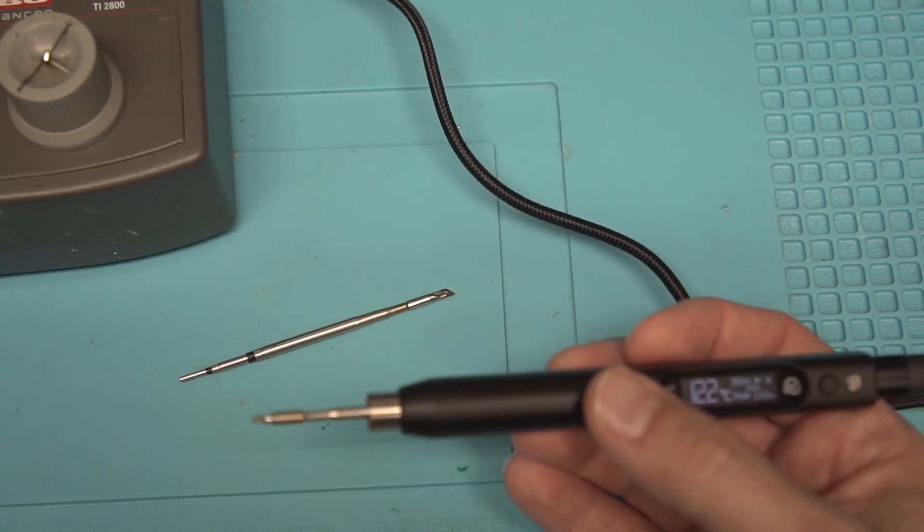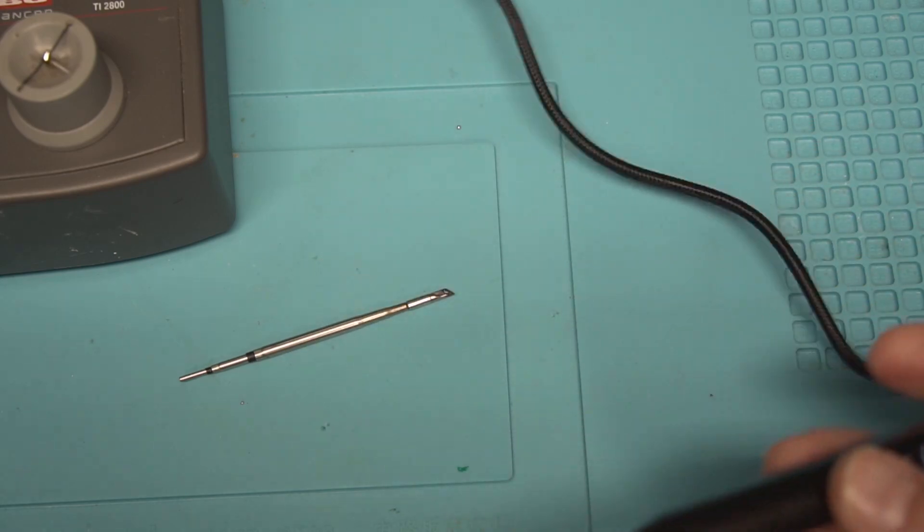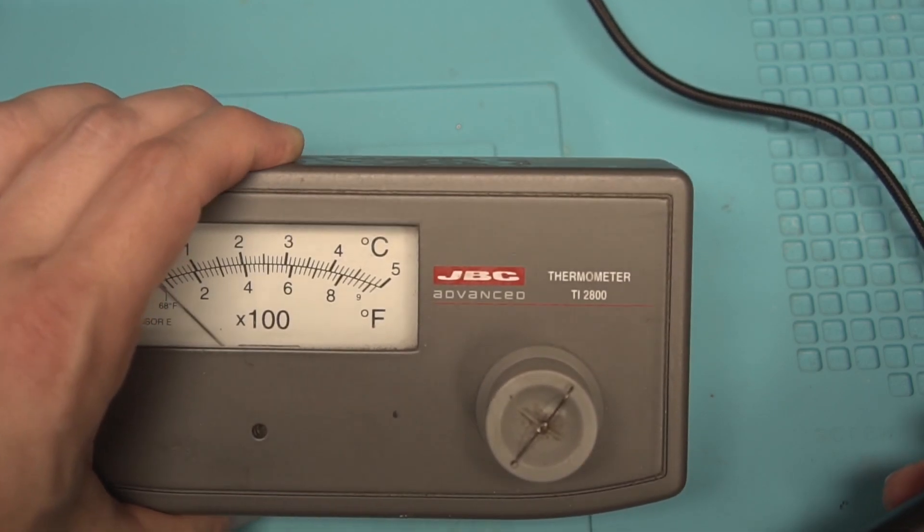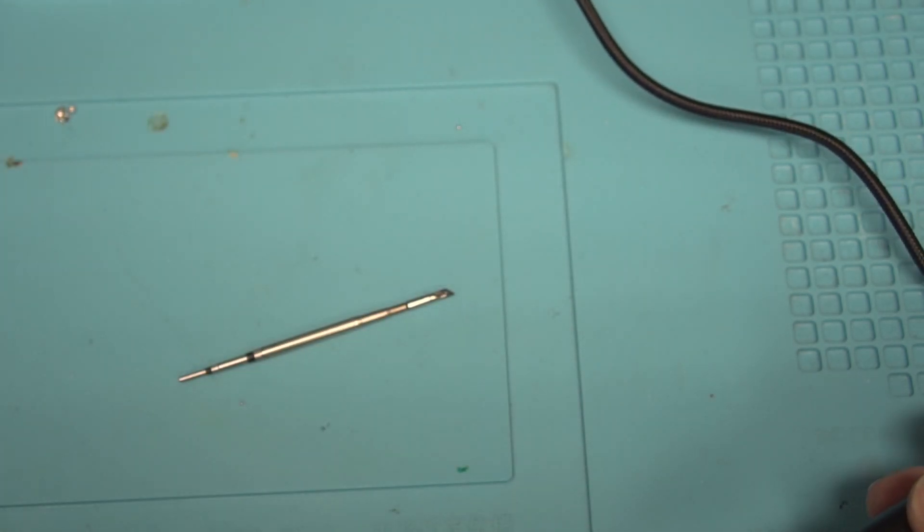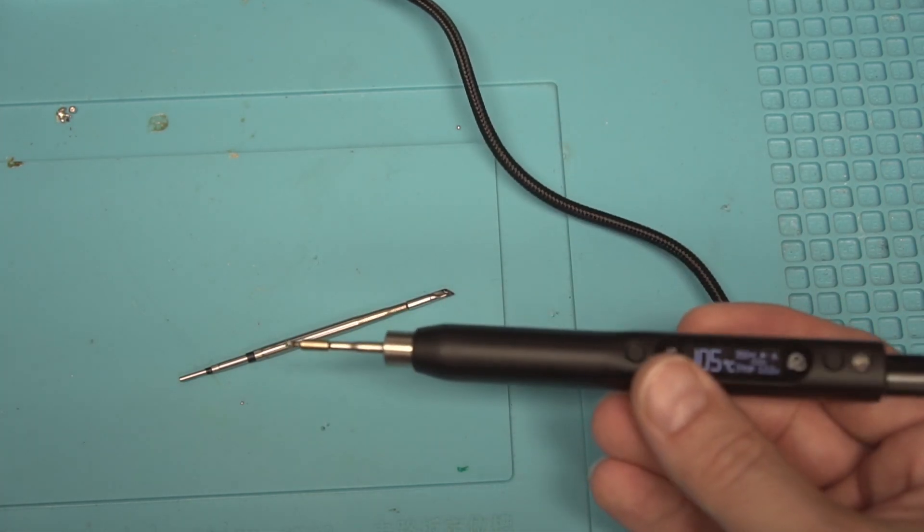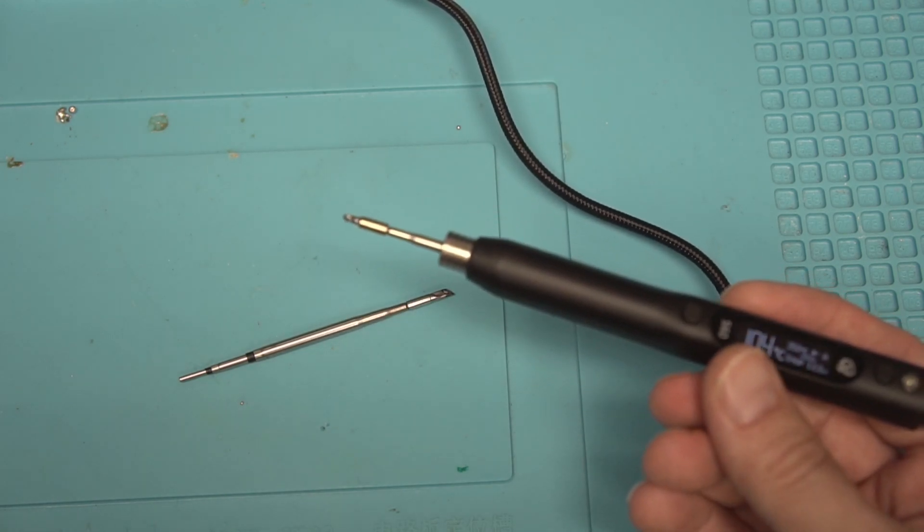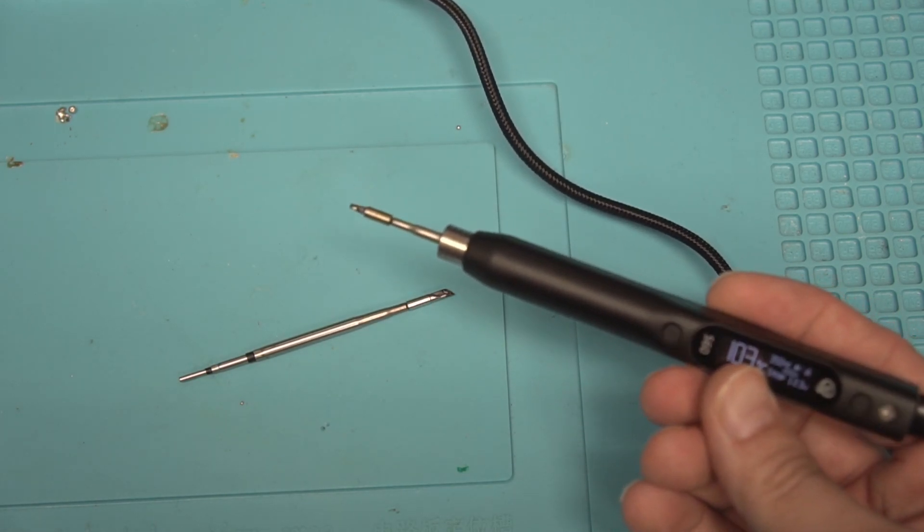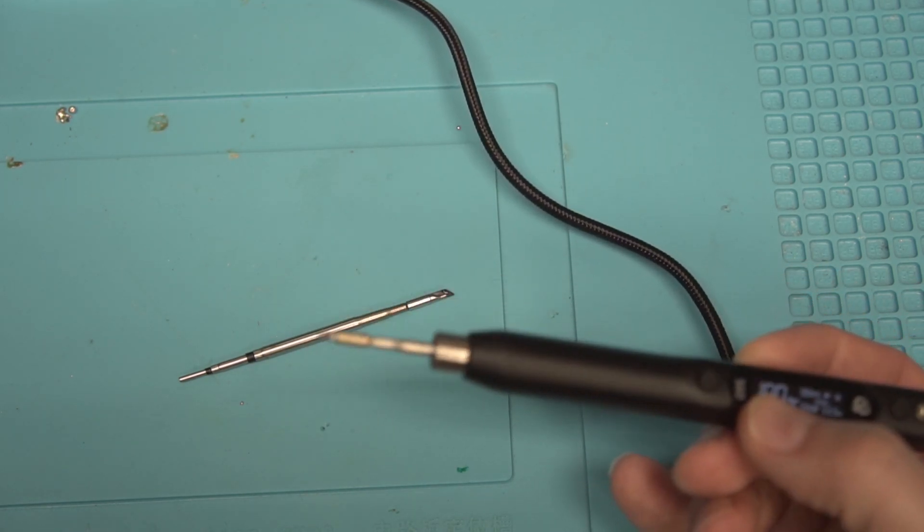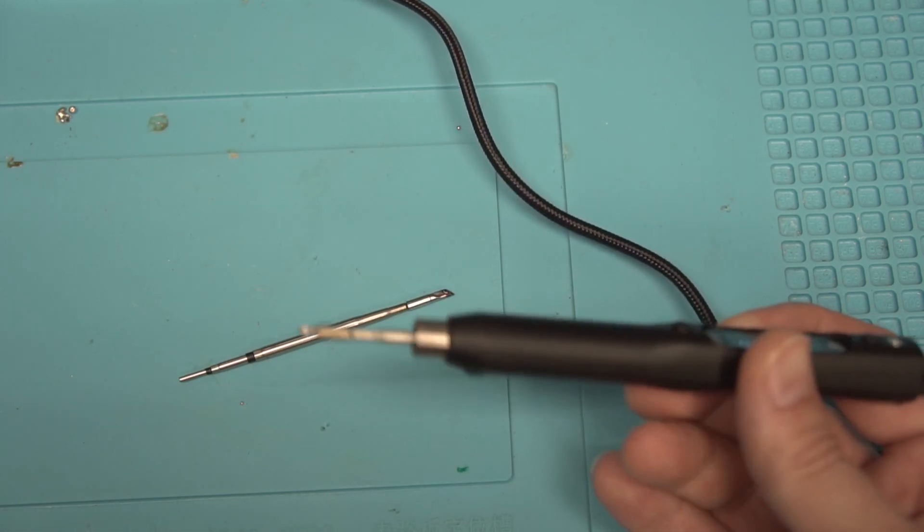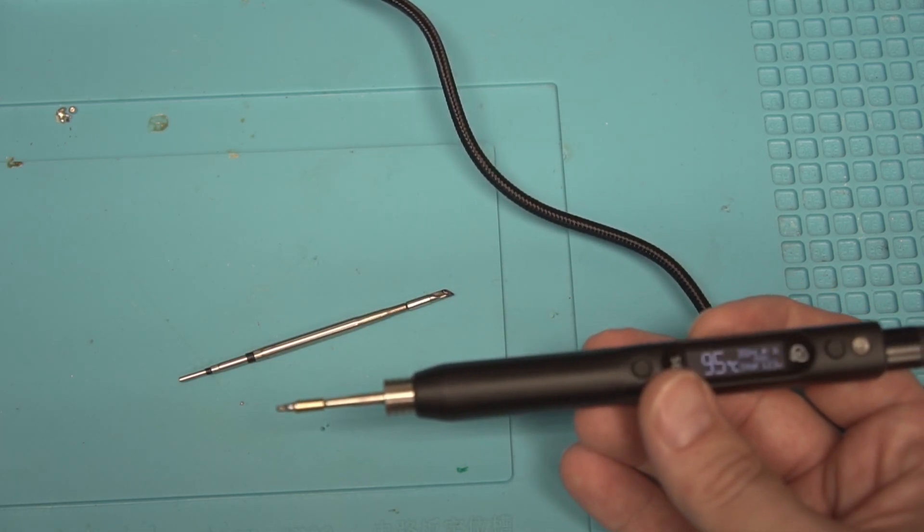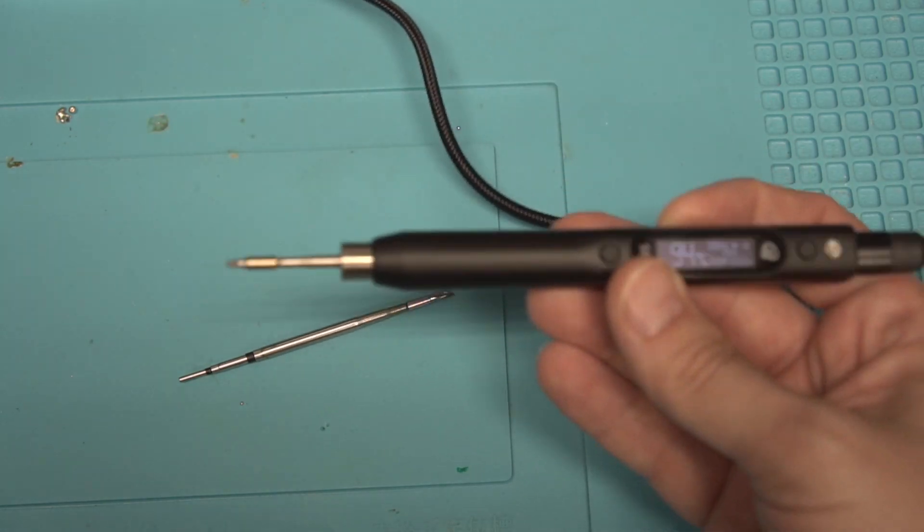So that is something to be aware of: if you want to use genuine tips, you're going to need something like this. It doesn't have to be the JBC calibration tool. There are other ones that you can buy. There's much cheaper ones you can get off of eBay, or you can just use a regular T or K type thermal couple. I think you would need K type. I believe this gets a little too hot for T type thermal couples. But yeah, anything like that you could use to be able to calibrate these and be able to use genuine tips.